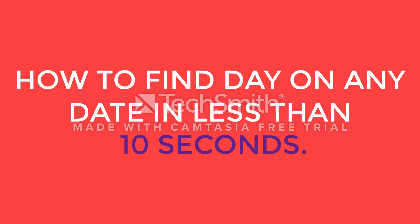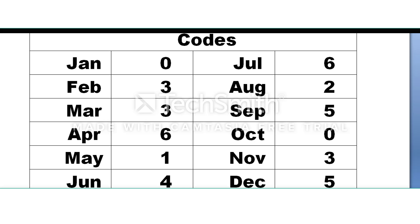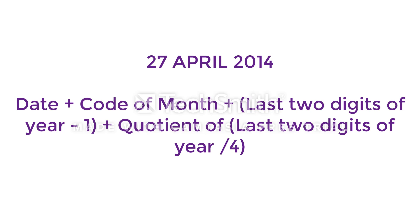Here are the codes: for January it is 0, for February it is 3, for March it is 3, for December it is 5, and so on. The pattern is 0 3 3 6 1 4 6 2 5 0 3 5. You have to learn these codes.